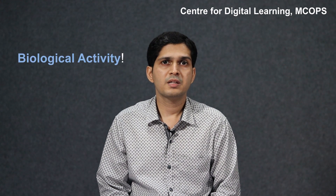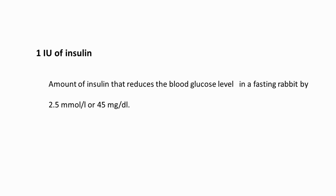You cannot weigh the preparations and quantify them in milligrams or micrograms, because one microgram of different insulin analogues produces different effects. One way to solve this problem is by quantifying the biological activity of insulin. One international unit of insulin is the amount of insulin required to reduce the concentration of blood glucose in a fasting rabbit by 2.5 millimoles per liter or 45 milligrams per deciliter. So, no matter what the source of insulin is or what its chemical structure is, one international unit of any insulin preparation is a standardized quantity that reduces blood glucose levels by a specific amount.